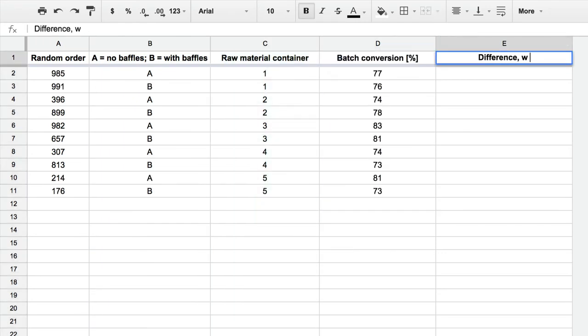The first container showed a difference of 76 minus 77. Then the data from the next container of raw materials was 78 minus 74. The next was 81 minus 83, then 73 minus 74, and finally 73 minus 81. It looks like the baffles didn't have that great an effect. There are quite a few negatives here, indicating that they may have actually decreased the conversion.